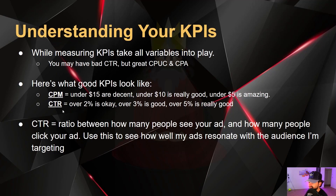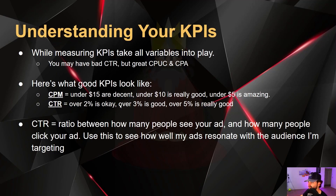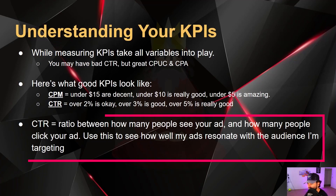For CTR, over 2% is okay — that's the bare minimum I look for. Over 3% is good; that means you're making creatives in the right direction. Every time you see 1%, try to improve the creative to get it to 2%. If you see 2%, aim for 5% or 10%. Over 5% is really good — I even have some ads hitting 8 to 10%. Usually over 2% is okay and something to keep improving.